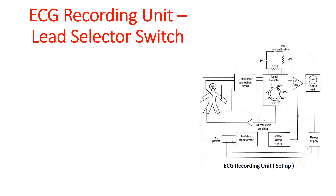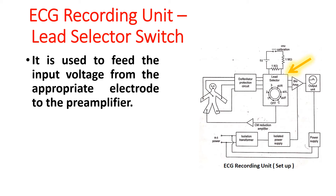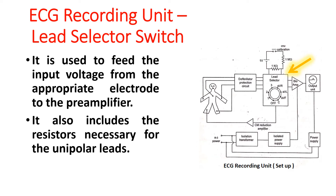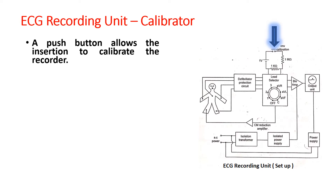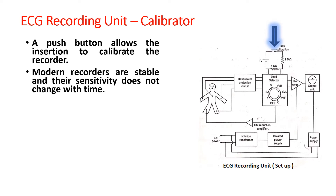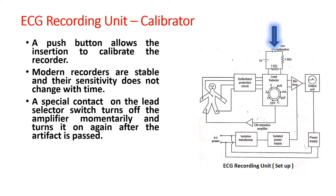Lead selector switch. It is used to feed the input voltage from the appropriate electrode to the preamplifier. It also includes the resistors necessary for the unipolar leads. The next block is the calibrator. A push button allows the insertion to calibrate the recorder. The modern recorders are stable and the sensitivity does not change with time. If it changes, the setting of the lead selector switch introduces an artifact on the recorded trace. A special contact on the lead selector switch turns off the amplifier momentarily and turns it on again after the artifact has passed.